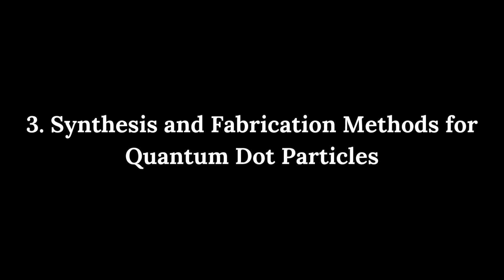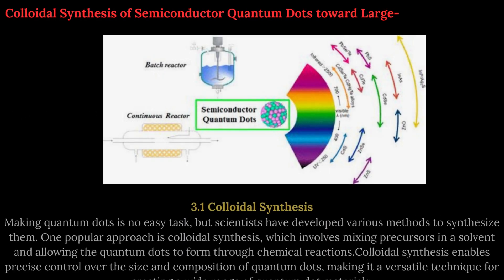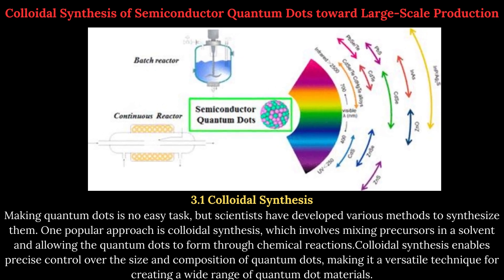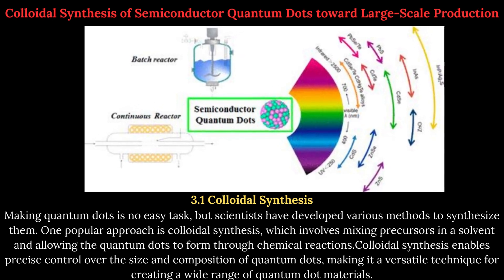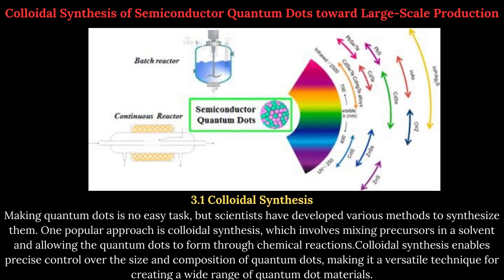3. Synthesis and Fabrication Methods for Quantum Particles. 3.1 Colloidal Synthesis. Making quantum dots is no easy task, but scientists have developed various methods to synthesize them. One popular approach is colloidal synthesis, which involves mixing precursors in a solvent and allowing the quantum dots to form through chemical reactions. Colloidal synthesis enables precise control over the size and composition of quantum dots, making it a versatile technique for creating a wide range of quantum dot materials.